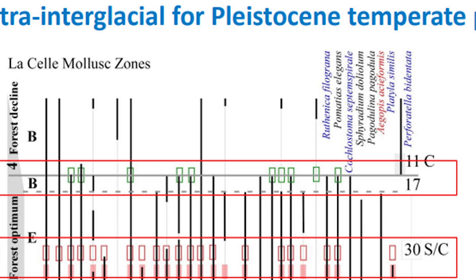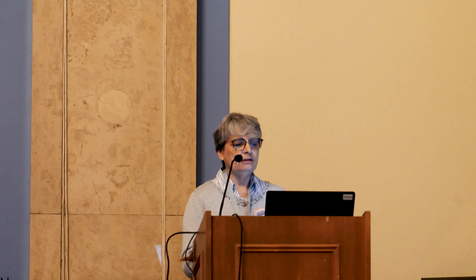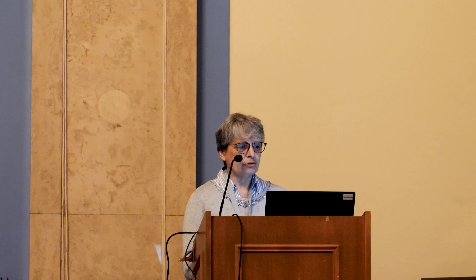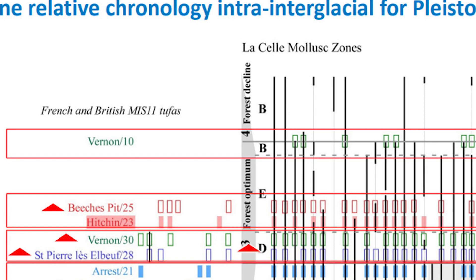Vermont and Saint-Pierre-lès-Elbeuf correspond to the maximum development of the Lyotiscus species assemblage. The British sites correspond to the phase of the optimum, but during the period when the species are occurring less regularly. And finally, the upper part of the Barnham sequence corresponds to the phase of declining forest extension.